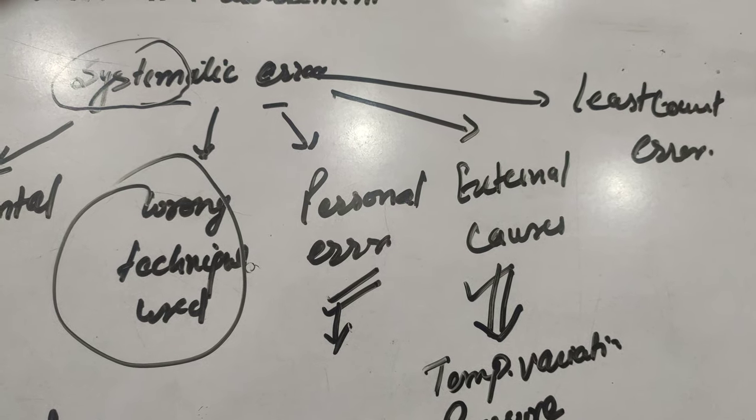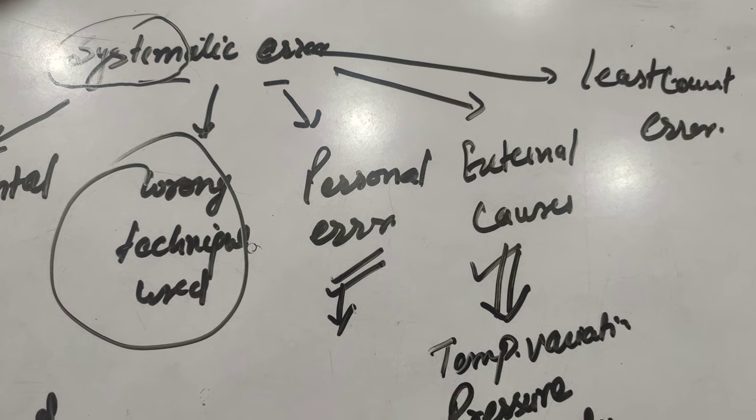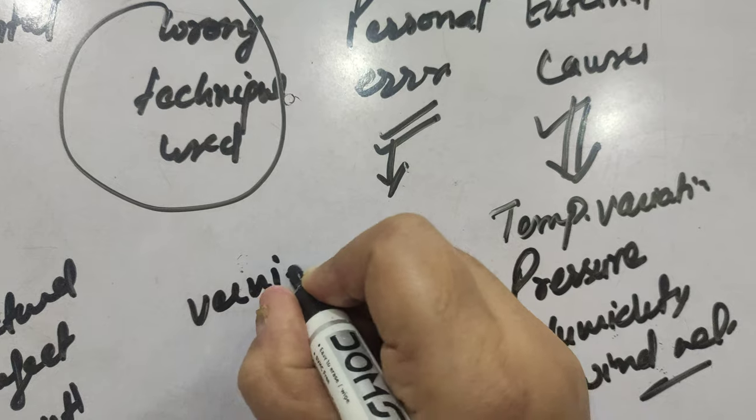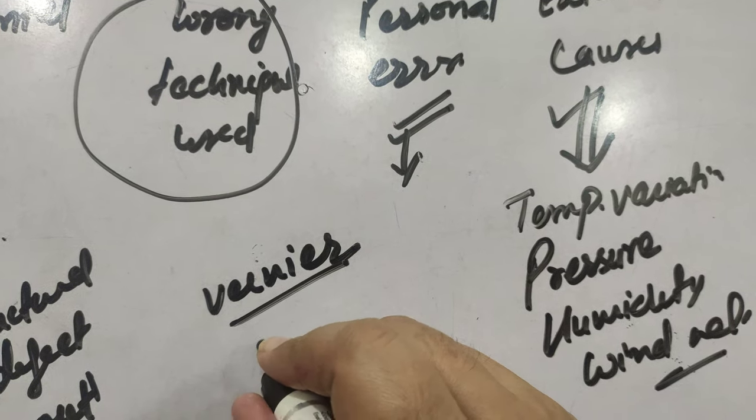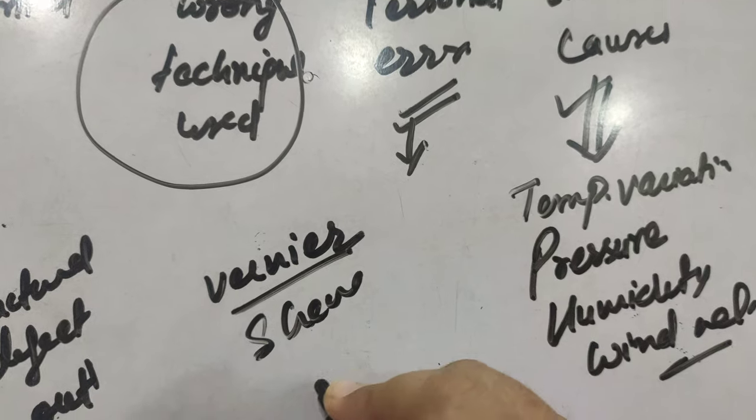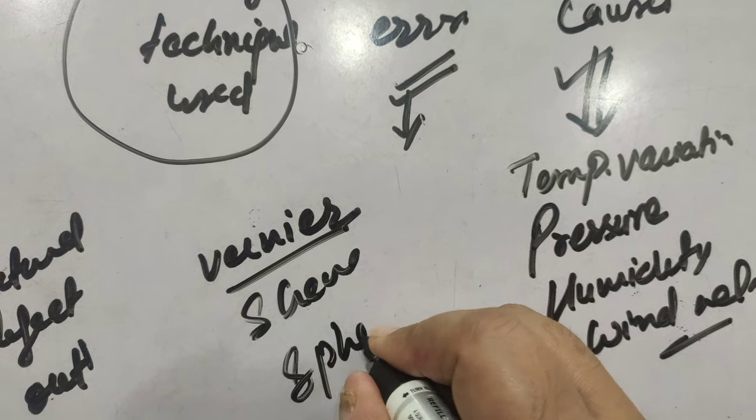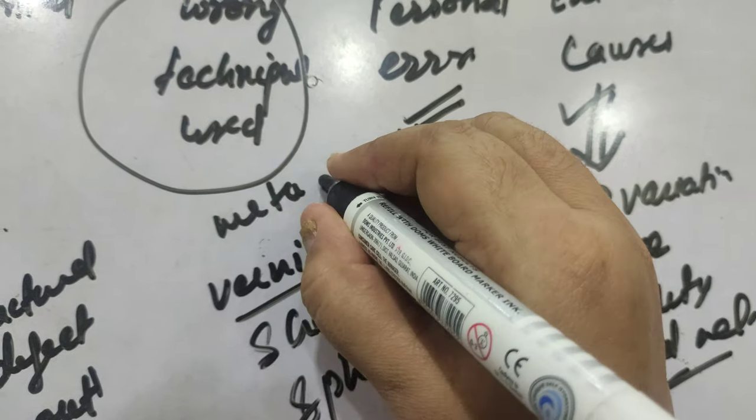We are having for measuring the length or diameter or radius by using vernier caliper that you will study in your practical portion. Vernier caliper and second one is screw gauge or we can use the spherometer and moreover for measuring the length we can use the meter scale.